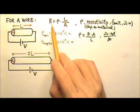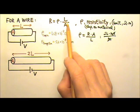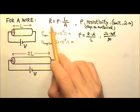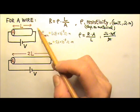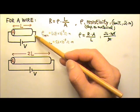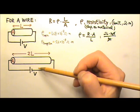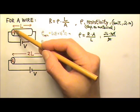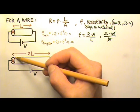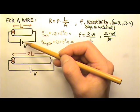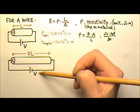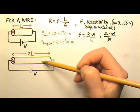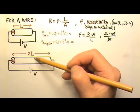This equation tells us that the longer the wire, the larger the resistance. Now let's compare two wires with the same cross-sectional area connected to the same voltage battery, but the second wire is twice as long.